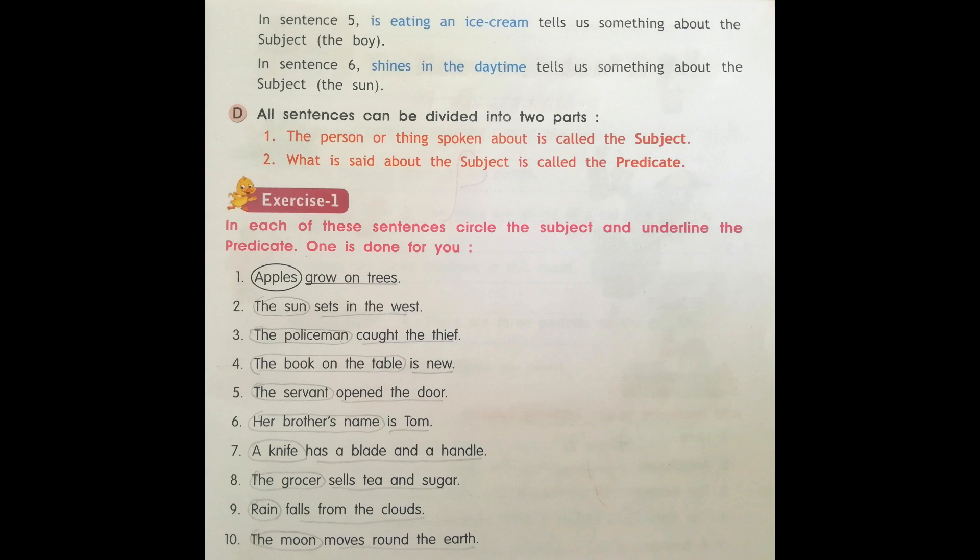Second: The sun sets in the west. Do you know which is the subject? Yes, correct. The sun. Sets in the west is the predicate.